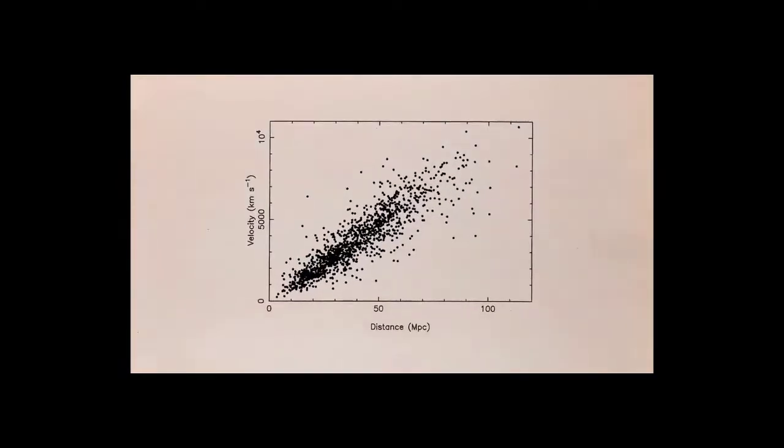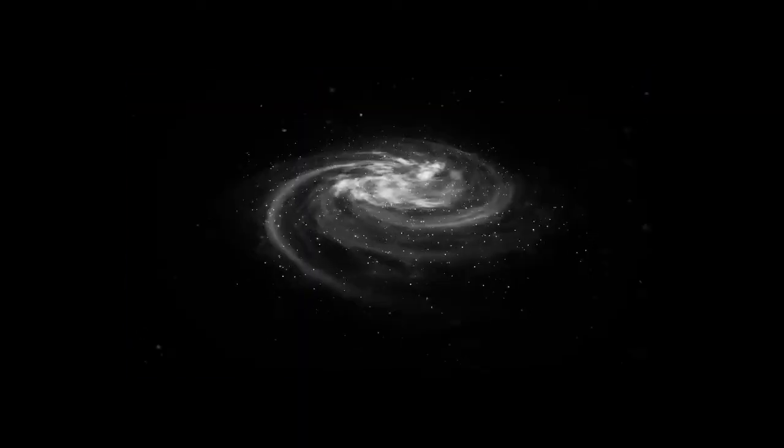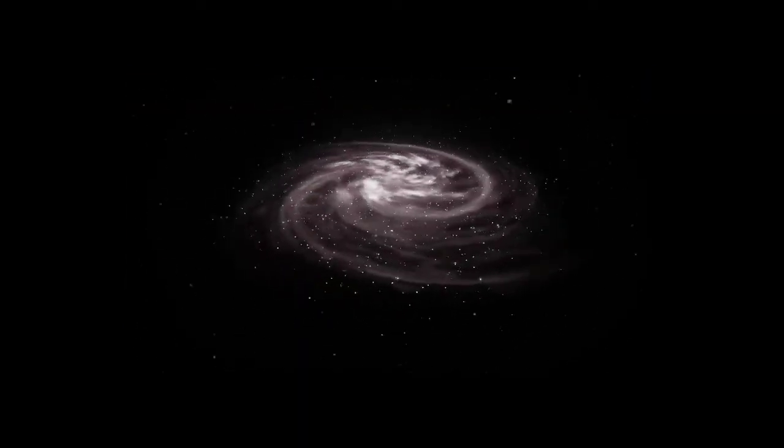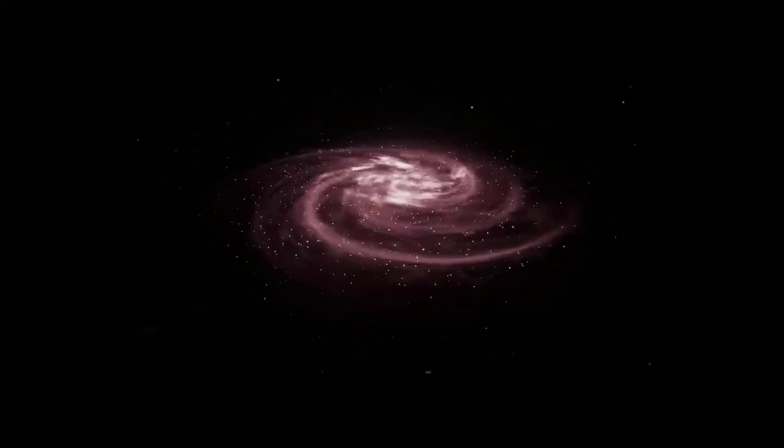When a celestial body moves away from Earth, the light it emits shifts to a longer, redder wavelength and lower frequency. An easy-to-measure redshift serves as an indicator of the distance between stars and planets.